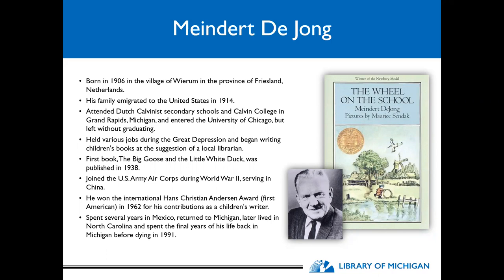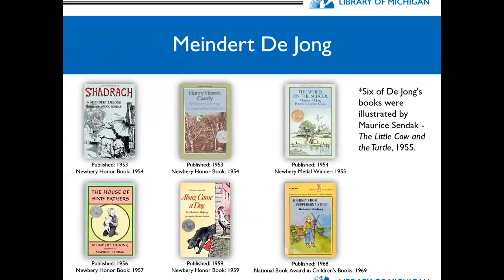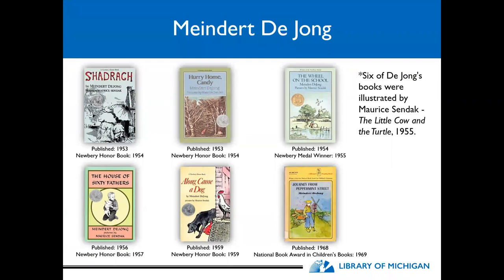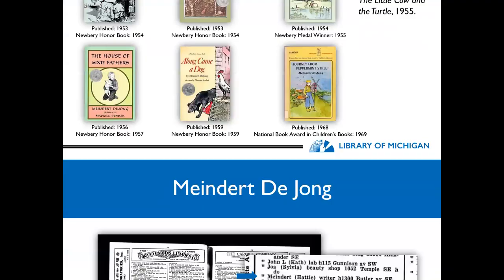The first book of his I was ever introduced to was The Wheel on the School. Six of his books were illustrated by the well-known illustrator Maurice Sendak, and several were Newbery Honor Books or Medal Winners. He also won the National Book Award in Children's Books in 1969 for Journey from Peppermint Street.